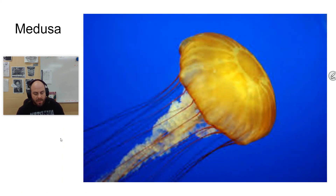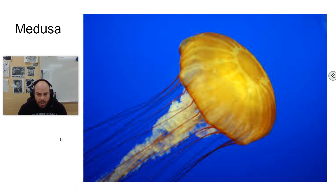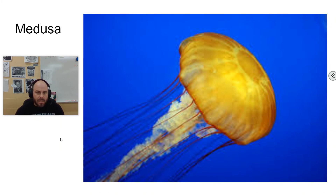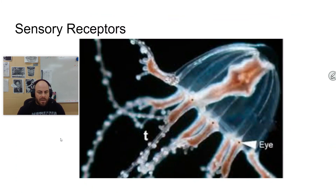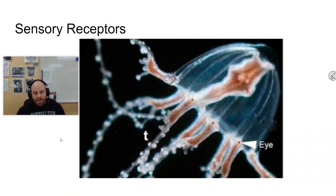The medusa stage is something very familiar to us — this is what we think of when we think of a jelly. It's typically referred to as a bell-shaped structure, with a curved bell and the mouth found on the concave side with tentacles extending out. Some tentacles can extend very far. They have certain sensory receptors: structures called statocysts, which give them orientation, and ocelli, which function as light receptors.